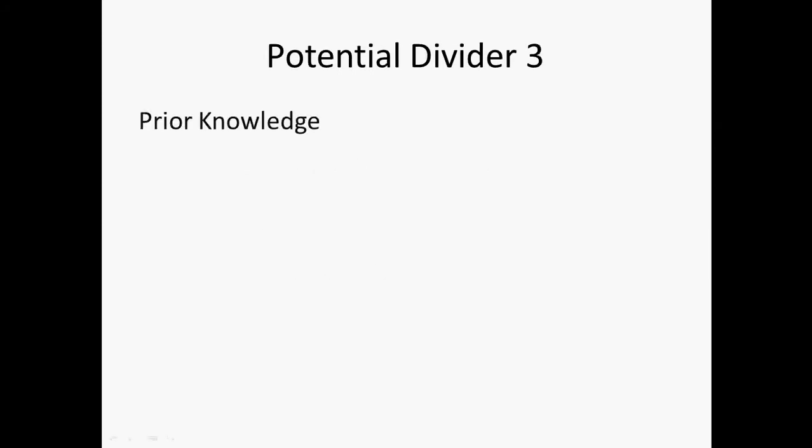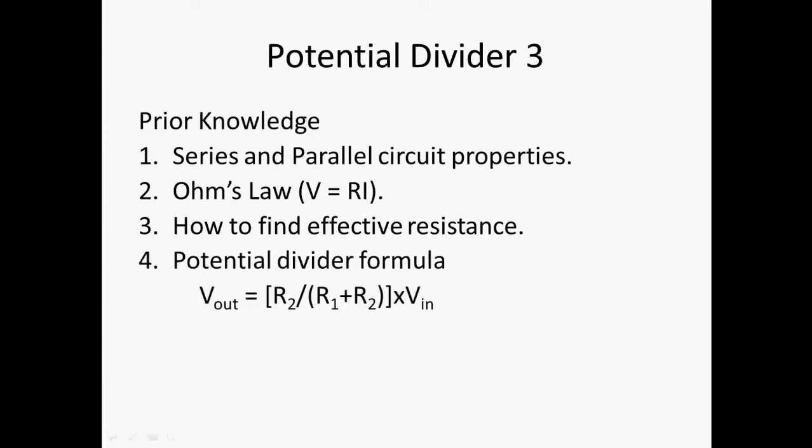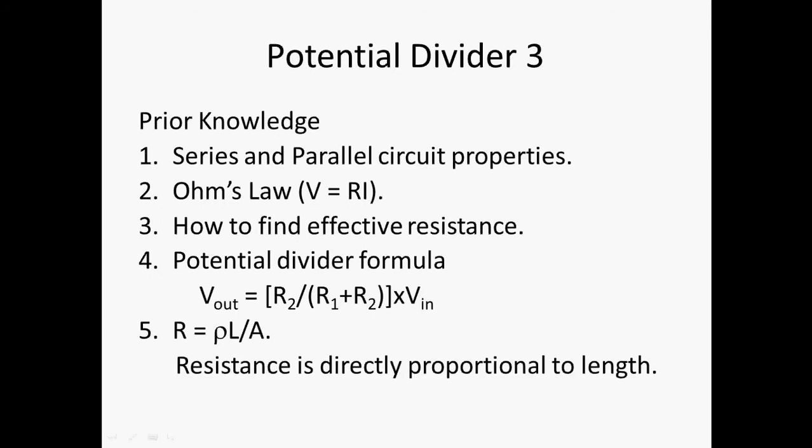First of all, let us look at the prior knowledge. You need to know the series parallel circuit, Ohm's law, as well as the effective resistance. We learned how to find the potential divider V_out using the formula V_out = [R2/(R1+R2)] × V_in. This has been covered in the first video. On top of that, for this particular lesson, you need to recall the formula R = ρL/A, which is taught in current electricity. The most important part of this formula is that resistance is directly proportional to length.